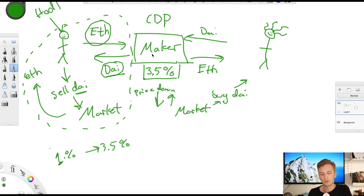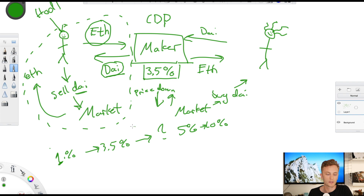So how are they actually going to solve this? Will they have to raise the stability fee even more — to 5%, to 10%? That is unclear. I don't think raising the fee has as large an effect as they want, even though it does have some effect. What I think they have to do is explore more reasons for people to actually hold DAI, because what people are doing now is generating DAI and selling it on the market.